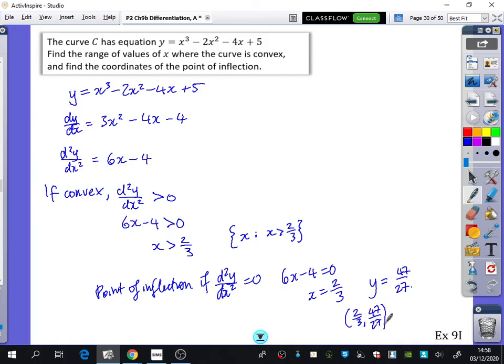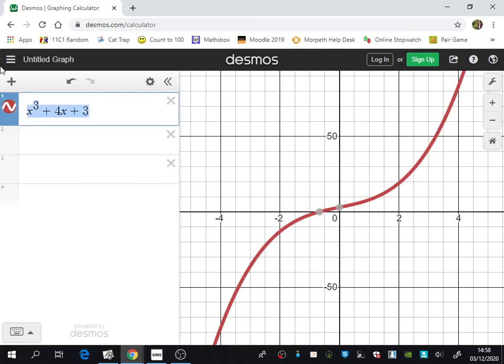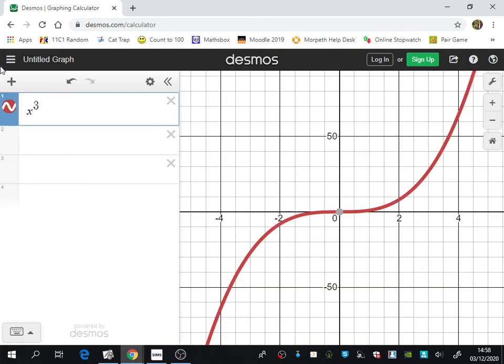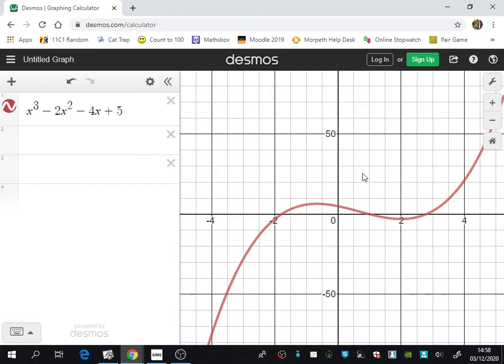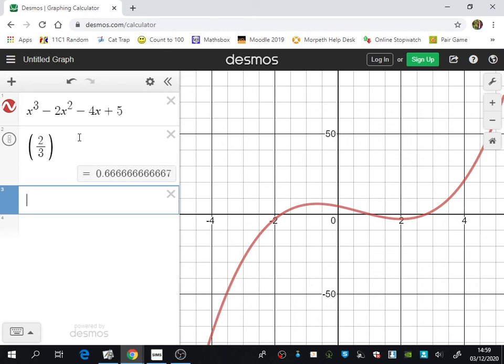I'm just going to show you that on Desmos because again, it's nice to actually see where that is. But I'll lock the board, freeze the board so you can keep copying. So it's x³ - 2x² - 4x + 5. And the coordinate was 2/3, 47/27.